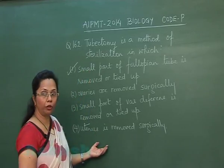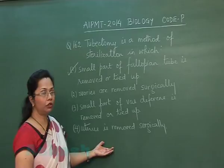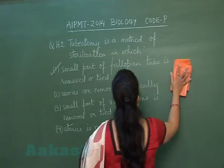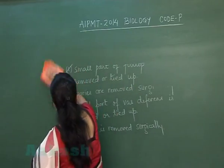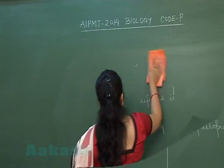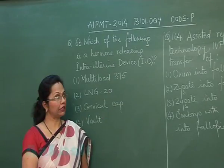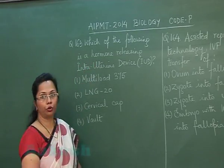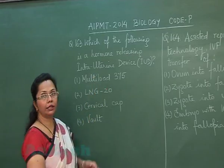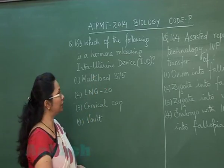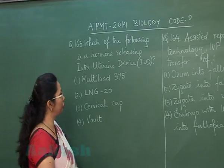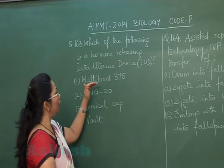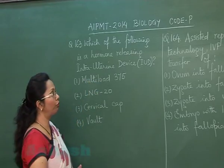Tubectomy, where the fallopian tubes are cut and tied, is a terminal method of contraception. Moving on to Question 163: Which of the following is a hormone-releasing intrauterine device? IUDs are contraceptive devices placed inside the uterus. Multi-load 375 is an IUD but it does not release hormones — it is a copper-releasing IUD.